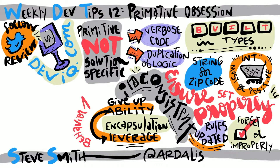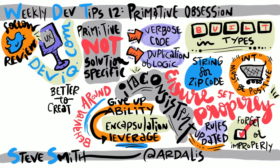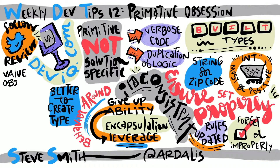Instead of having to check, probably in many places, that quantity is positive or that a string properly represents a valid zip code, it's far better to create a type to represent the concept in question along with these rules. Such types should typically be immutable value objects that cannot be created in an invalid state and thus need not be validated where they are passed in as parameters. It's useful to have easy ways to cast primitives to and from these value objects, but this should be done only at the edges of the application. Try to use the value objects as much as possible within your actual business logic or domain model rather than a primitive representation of the type.